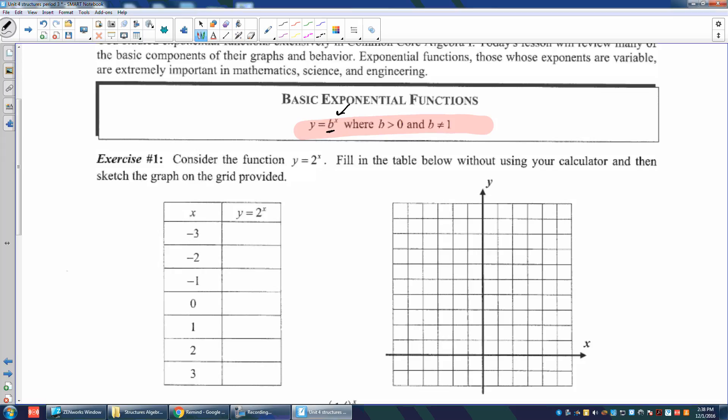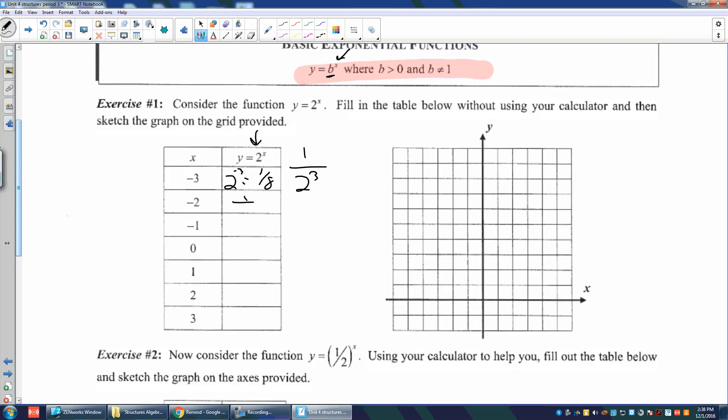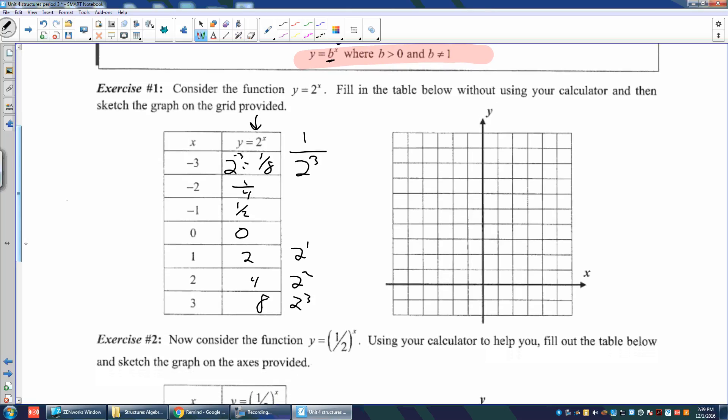You notice that we have the base raised to the variable. The base is going to be a constant. The variable x, the exponent, is going to be what's changing. So here we notice the base is 2. So this is saying what is 2 to the negative 3rd? Well remember that is 1 over 2 cubed and 2 cubed is 8. So that's 1 over 8.